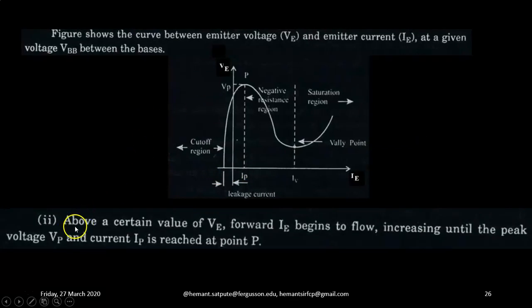Second case, above a certain value of VE as we gradually increase the voltage, emitter voltage forward IE forward current emitter current begins to flow increasing until the peak voltage VP and the current IP is reached at the point P.